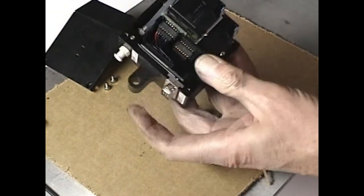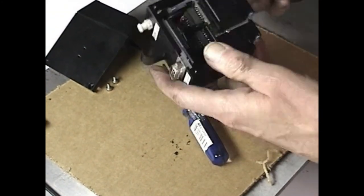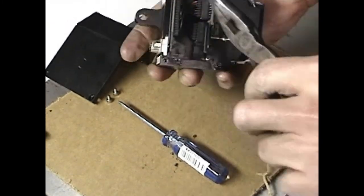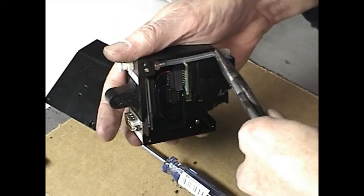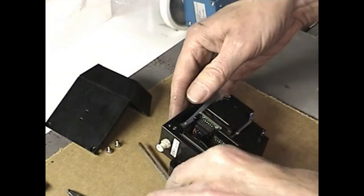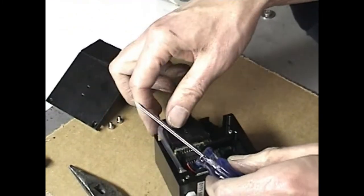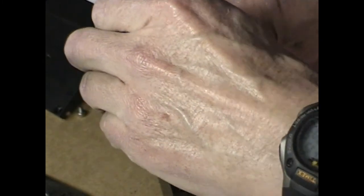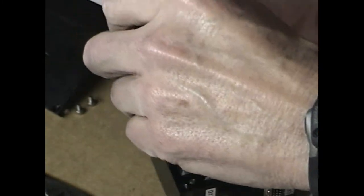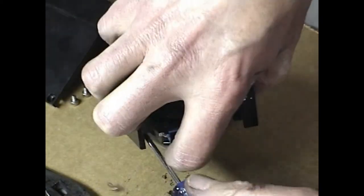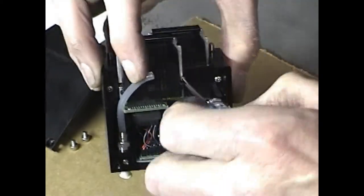Detach the ink line from the print engine. Do this carefully. Try not to bend or kink the ink line or you will have to replace it. Move the ink line out of the way to get access to the small mounting screws. Remove the small mounting screws that hold the print engine in place.